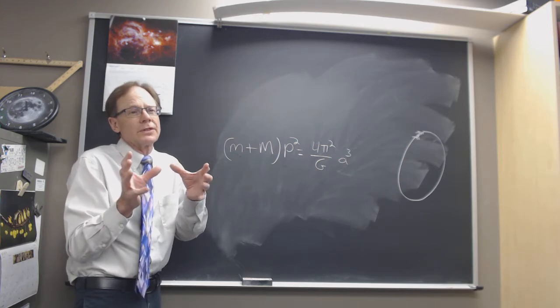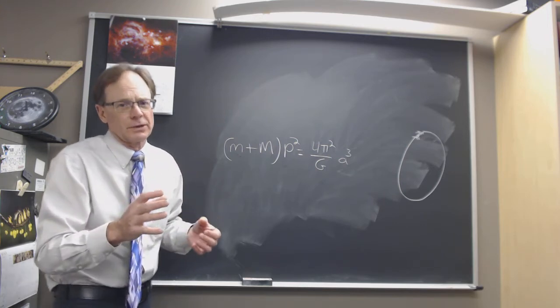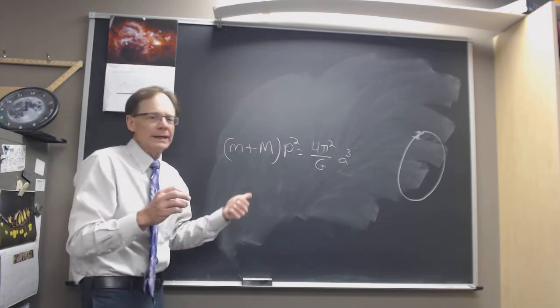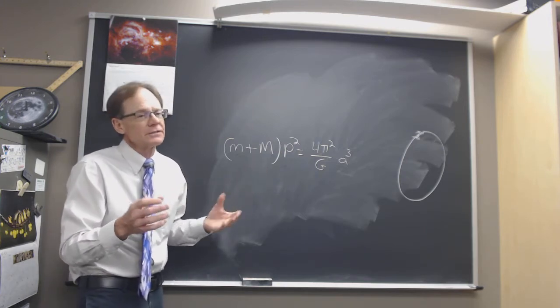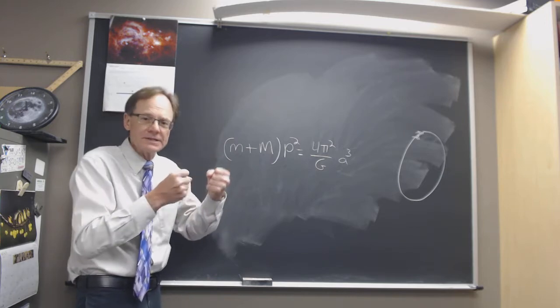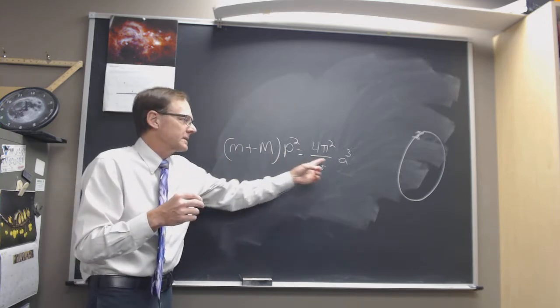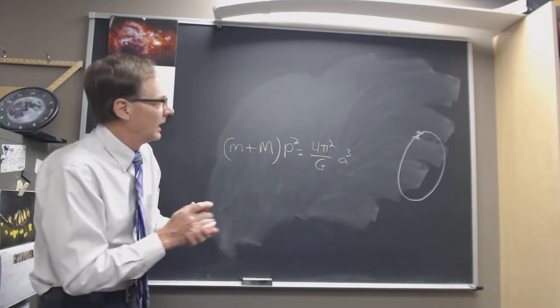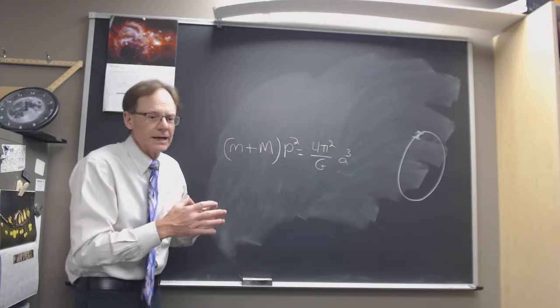Yet it's got much bigger importance as well. When we're thinking about masses of stars, this is the way we determine masses of stars most directly, by finding stars in binary orbits, measuring the periods of the orbit and the semi-major axes of orbit, and we've got the masses of stars.